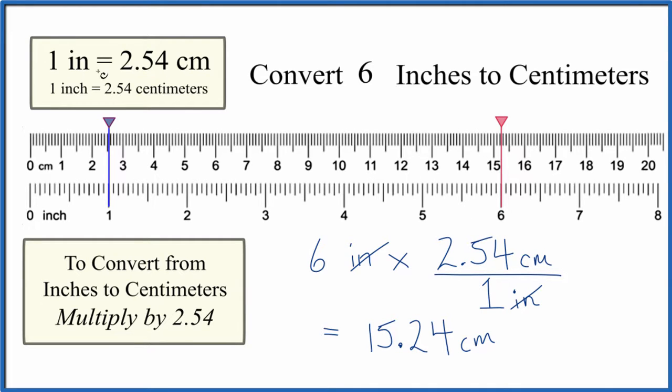The key is you need to remember one inch equals 2.54 centimeters. And to convert from inches to centimeters, we multiply by 2.54.